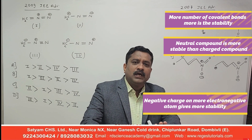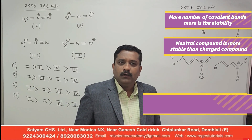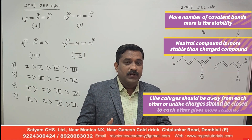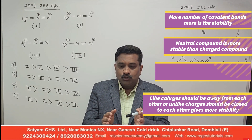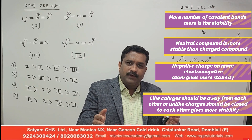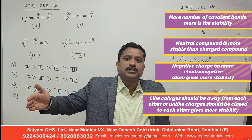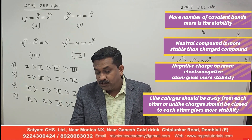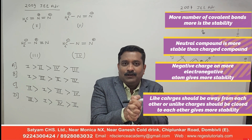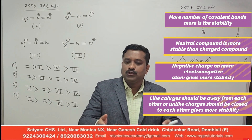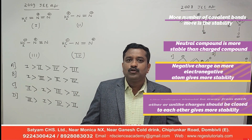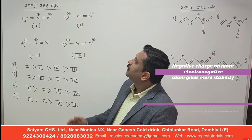If you find that in both structures the negative charge is on the same atom, then the fourth rule gives the answer: like charges should be away from each other. Positive-positive repulsion means two positive or two negative charges placed far apart give stability. Conversely, two unlike charges — positive and negative — should be close to each other. These are the four rules; with them you can solve any resonance stability question in JEE Advanced.